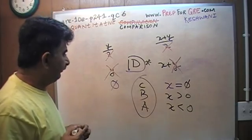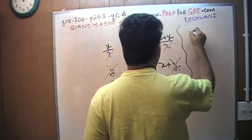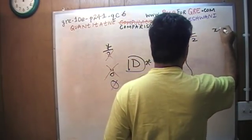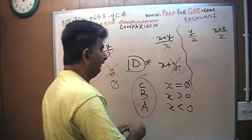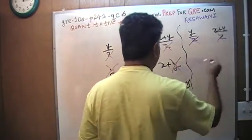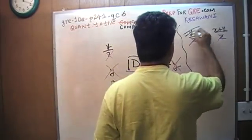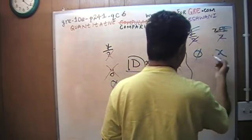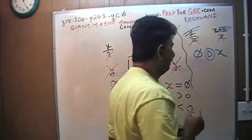So I'm going to do this problem one more time very quickly. y over 2 versus x plus y over 2. The very first thing I'm going to do is realize that this 2 plays no role. Once the 2 is gone, I also realize that this y plays no role. So I'm left with 0 versus x. Since I know nothing about the x, the answer is D. That's all.